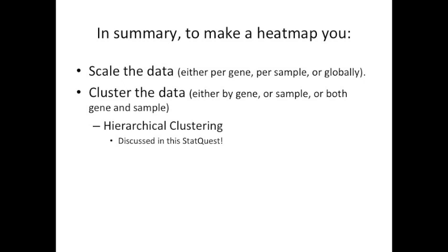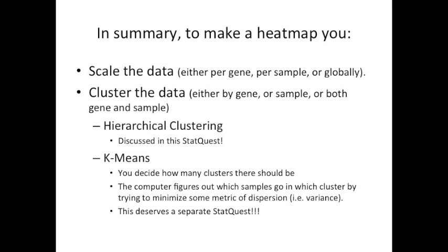The good news is most of these choices are set to some default value. If you're doing this in R, just run it and see what you get. If it looks good, go with it. If we don't want to use hierarchical clustering, we can use a method called k-means. When we do this, we have to decide how many clusters there should be in advance. Then the computer figures out which samples go in which cluster by trying to minimize some metric of dispersion. This deserves a separate StatQuest.